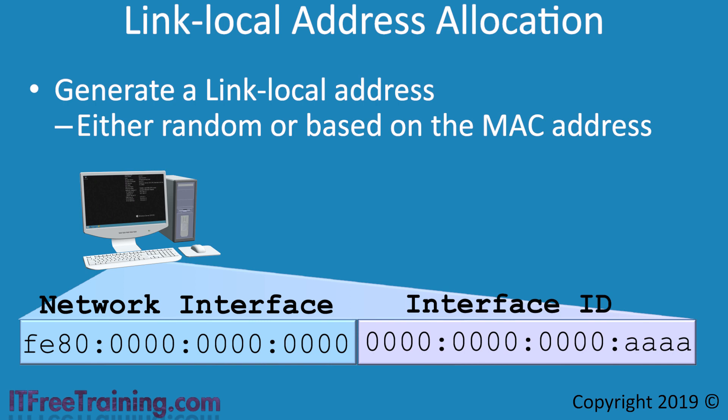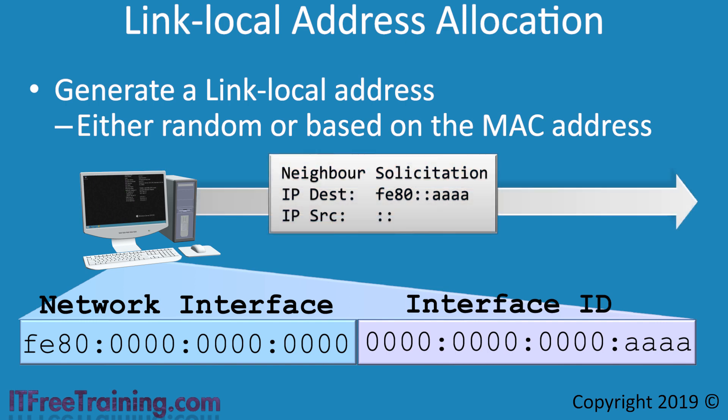Testing the IP address to ensure it is unique is a simple process. The device sends a message to the IP address it wants to test. If another device on the network is using that IP address, it will respond back that the IP address is in use. Since the device does not have a source IP address, the response will be returned on the multicast address to all nodes — the IPv6 equivalent of a broadcast. This should be very rare, but it does happen, and the device will need to choose a different link-local IP address. If no response is received, the device now has a valid link-local IP address.